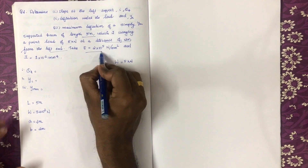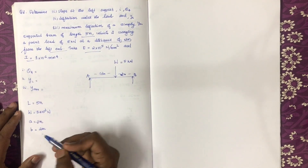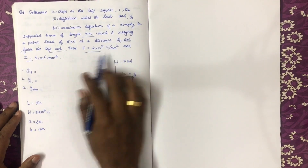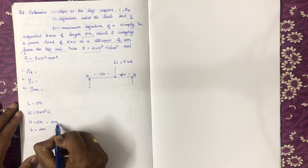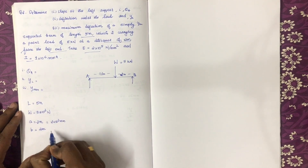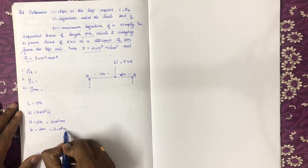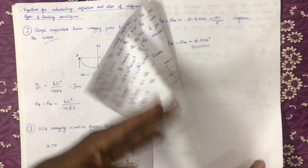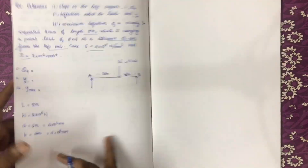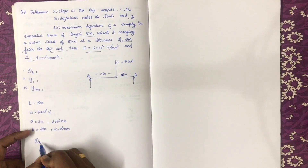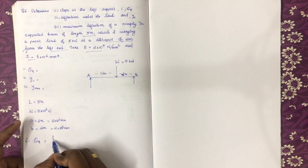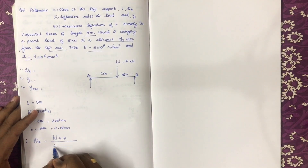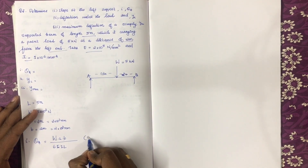E is equal to 2×10⁵ N/mm² and I is equal to 1×10⁶ mm⁴. W equals 5 kN, which is 5×10³ N. Now substituting values: theta A equals W·a·b divided by 6EI·L, multiplied by (a + 2b).